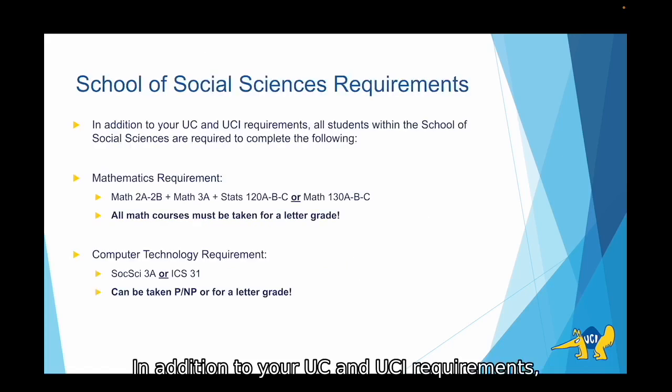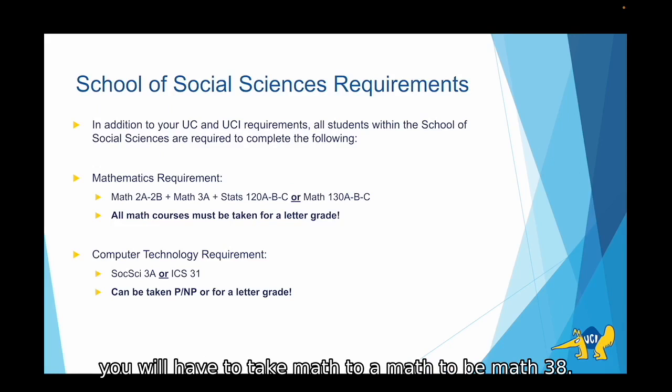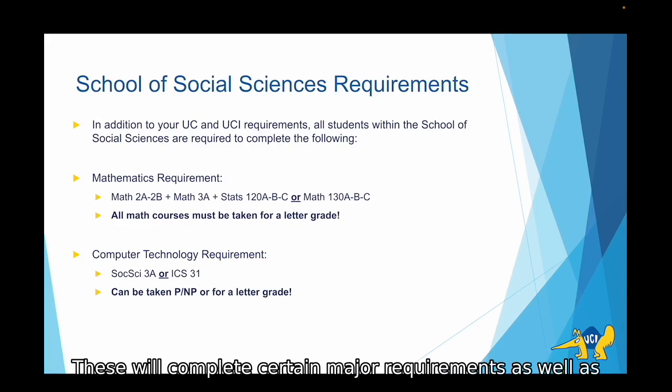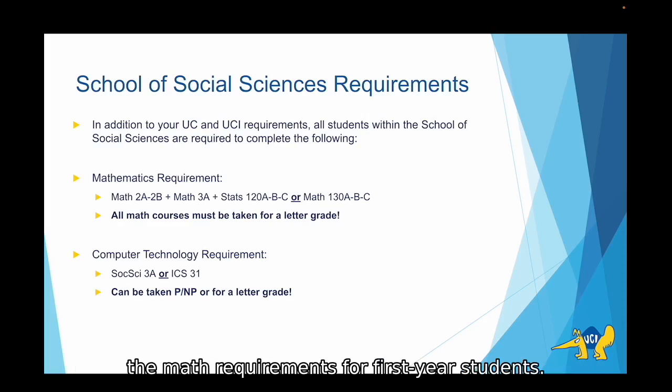In addition to your UC and UCI requirements, all students within the School of Social Sciences are required to complete the mathematics requirement and the computer technology requirement. As a Quantitative Economics major, you have specific classes you'll need to take for these requirements as these classes will also count for your major. For the mathematics requirement, you will have to take Math 2a, Math 2b, Math 3a, and then either the Statistics 120abc series or the Mathematics 130abc series. These will complete certain major requirements as well as the math requirement.